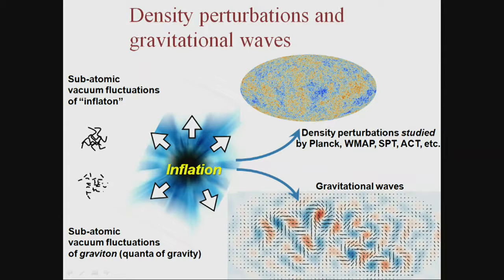Inflation is a process that inflates space, but also the quantum fluctuations in space itself for any fields around at that time. For the inflaton field responsible for inflation, those fluctuations were inflated into density perturbations you now see in the microwave background or in galaxy structures. That part is verified to extremely high precision. The quanta of gravity are also inflated by inflation to create a stochastic background of gravitational waves — that's what we're trying to study here.